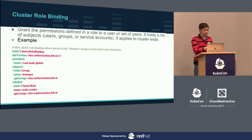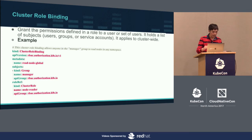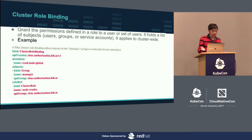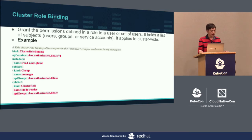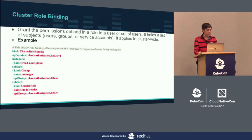Next is ClusterRoleBinding. To grant permission, you use a RoleBinding. The kind is ClusterRoleBinding. The name is where you specify the binding name. The subject right now is the managers group—I'm saying all the manager group can do the following. The roleRef says the cluster role is the 'node-reader' I specified previously. So basically, all users in the manager group can read the nodes.